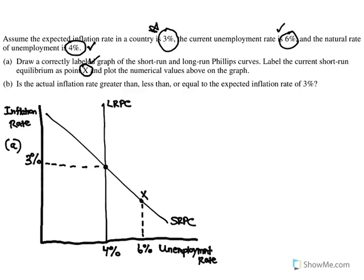For letter B, it says: is the actual inflation rate greater than, less than, or equal to the expected inflation rate of 3%? This is just multiple choice — we just have to pick one of these three options and we don't have to explain, which is great. The answer for letter B is going to be less than.